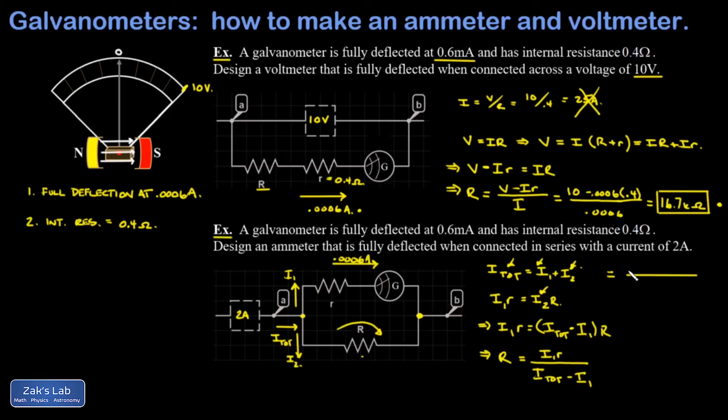When I plug the numbers in, I1 was 0.0006 amps, internal resistance was 0.4 ohms, divided by I total, which was 2 amps, minus I1.